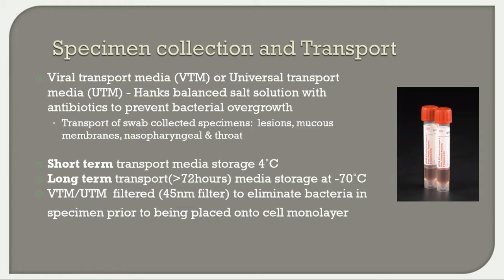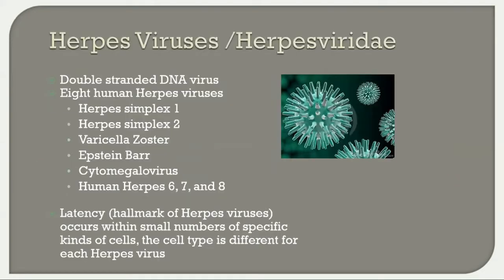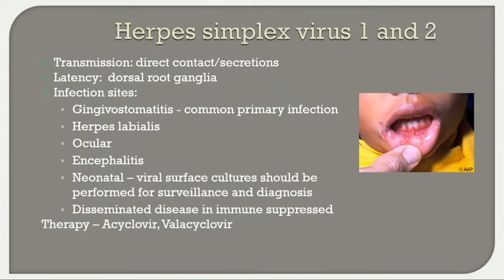The herpes viruses are double-stranded DNA viruses. There are eight human herpes viruses: herpes simplex 1 and 2, varicella zoster, Epstein-Barr, CMV, and herpes 6, 7, and 8. Latency is the hallmark of herpes viruses — it occurs within small numbers of specific cells, and the cell type is different for each herpes virus. Let's first talk about herpes simplex 1 and 2.